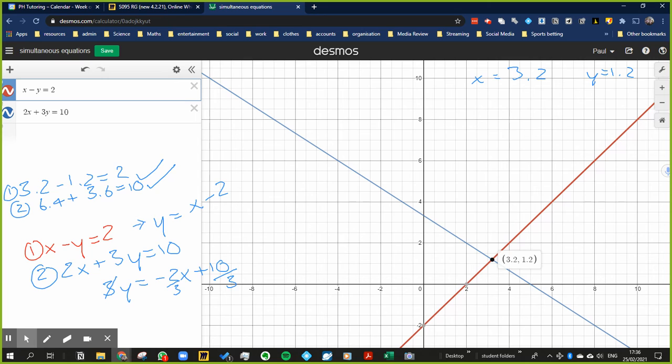So first thing I'm going to do is I'm going to take equation one and I'm going to multiply it by 2. So equation one ends up being 2x minus 2y is equal to 4.